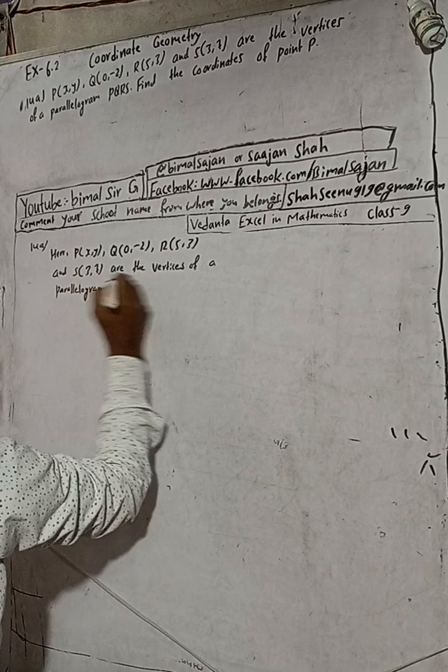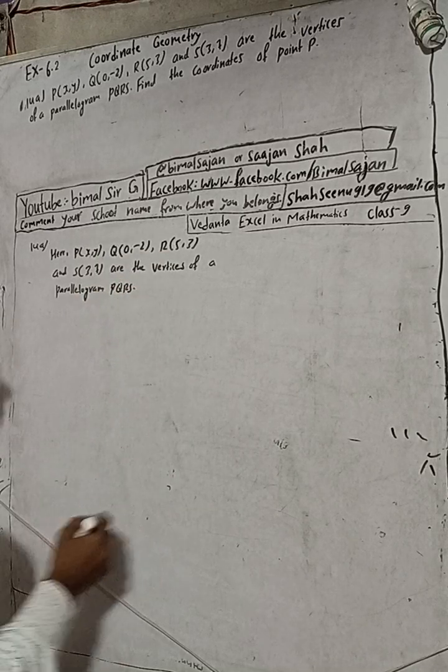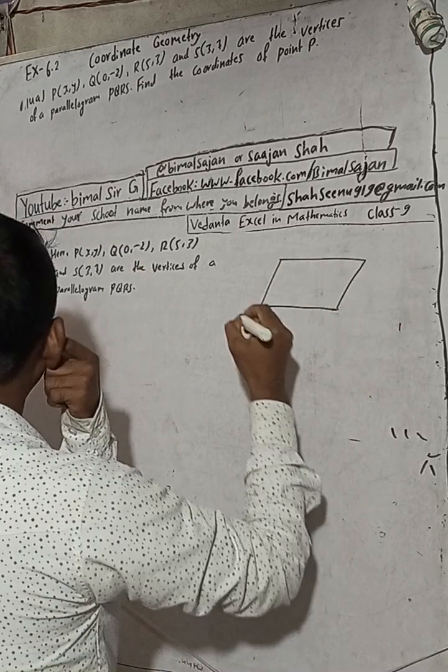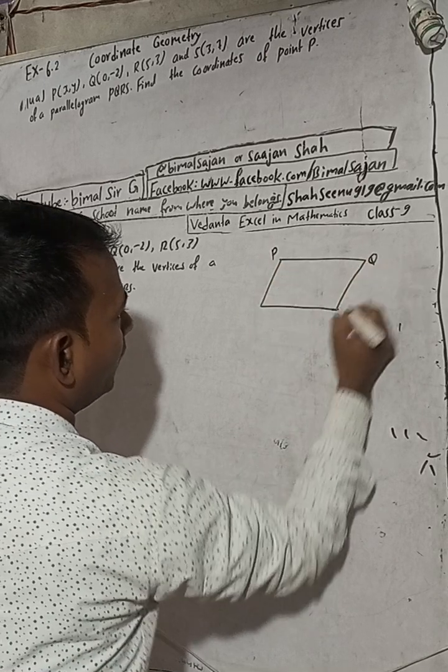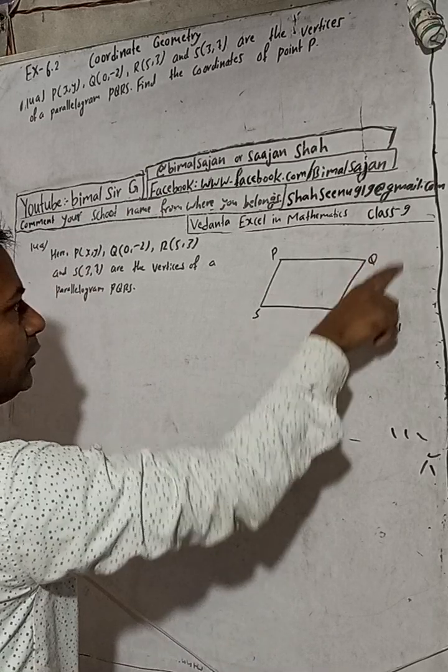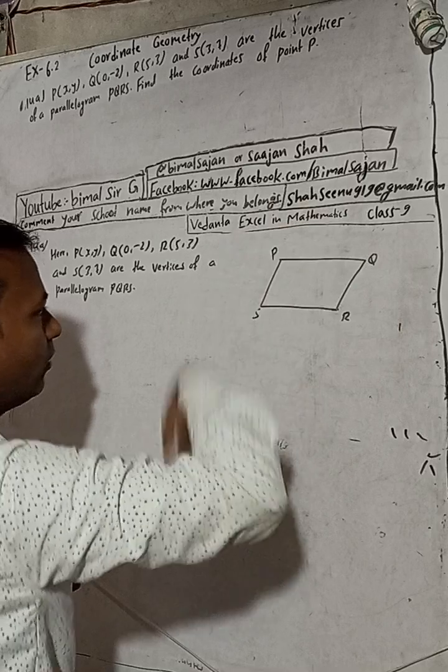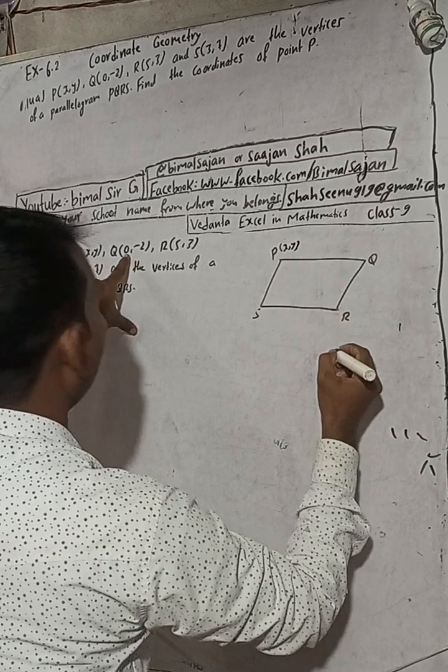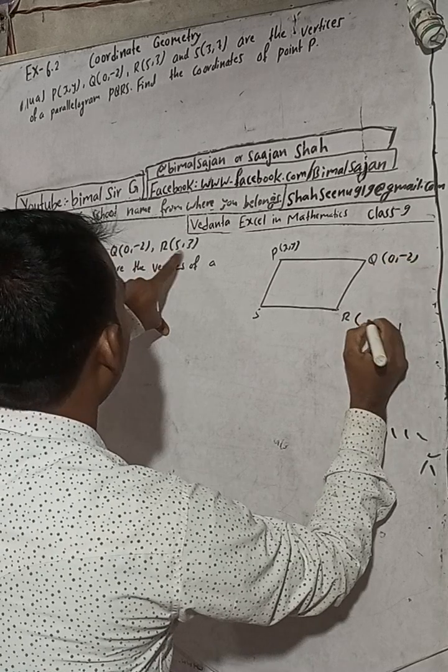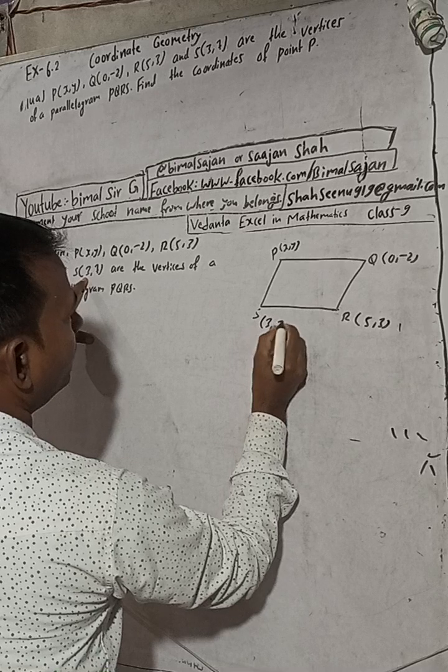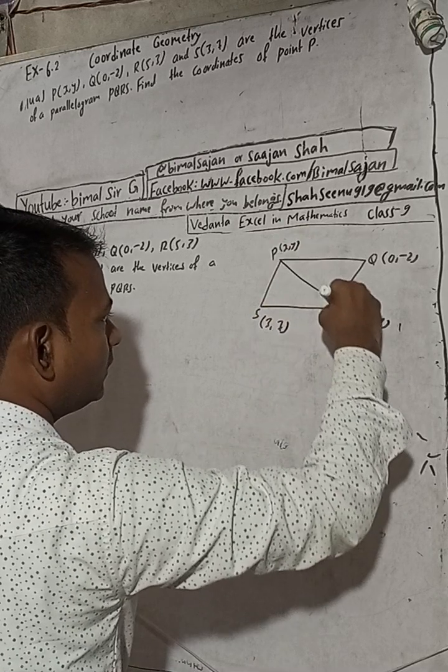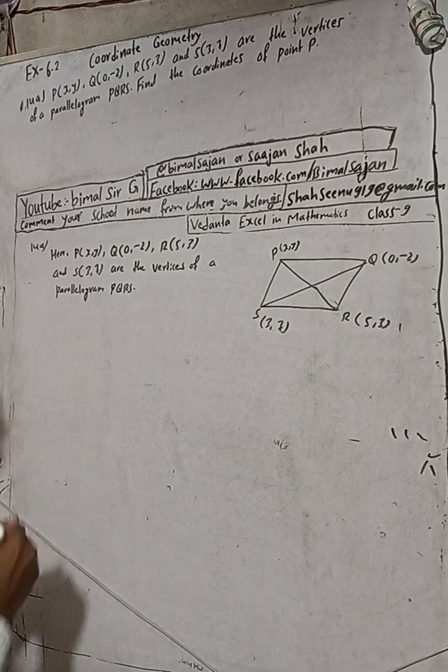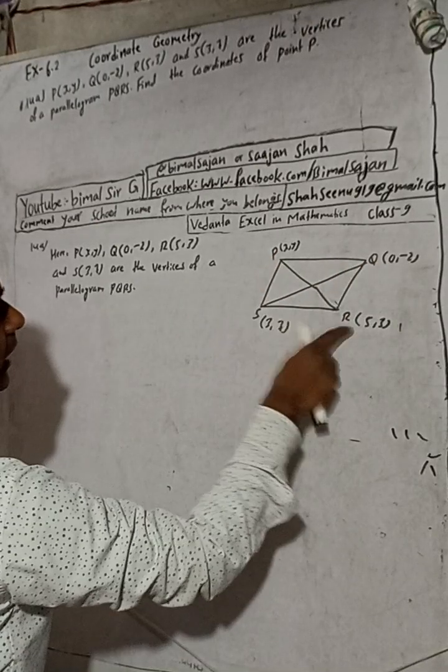These are the vertices of a parallelogram PQRS. I will draw a parallelogram for this figure. Name the figure PQRS either way, clockwise or anticlockwise. Now the diagonal - this is the diagonal. Join this diagonal PR and diagonal QS. We know both are diagonals, PR and QS are the two diagonals of this parallelogram.